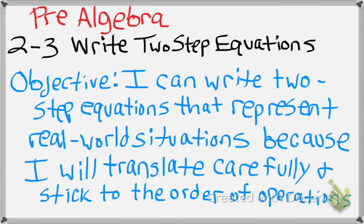In this periodical video, Chapter 2, Lesson 3, we're going to talk about writing two-step equations of our own. In the last section, we talked about solving them. Now we're going to talk about how to set them up for ourselves, if they're not already given to us. Our objective is: I can write two-step equations that represent real-world situations because I will translate them carefully and stick to the order of operations.